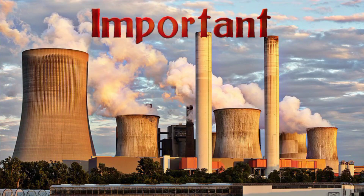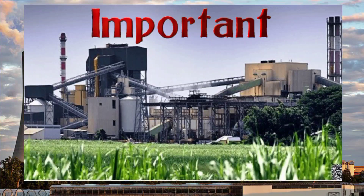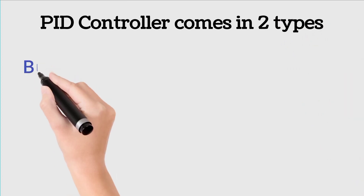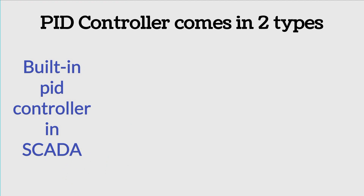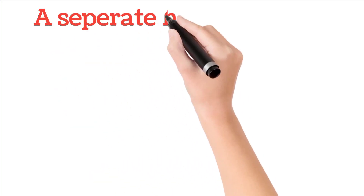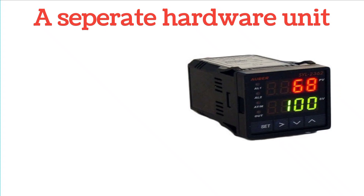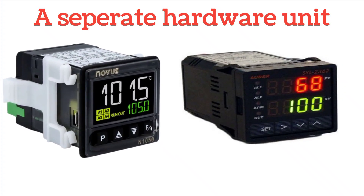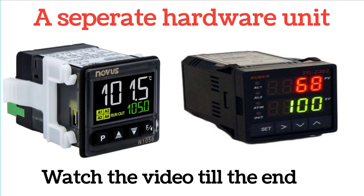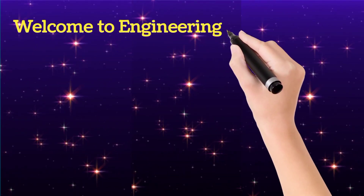PID controller comes in two types. The first one is software based — we call it a built-in PID controller. In SCADA, you must have seen some blocks as shown in this image; these blocks are PID controllers to control various processes. The second one is hardware based — a separate hardware unit. You also must have seen PID controllers mounted in some panels, where various parameters are controlled by different PID controllers.